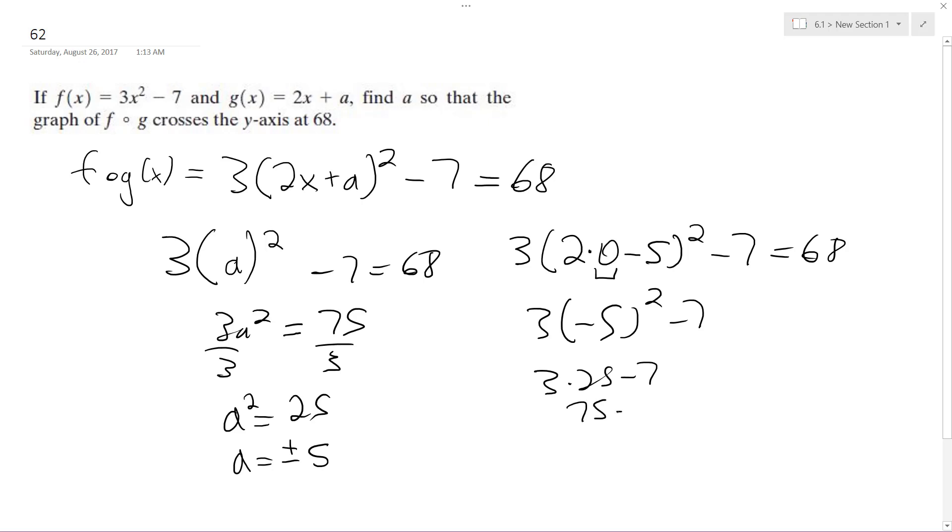So this is three times 25 minus seven. So 75 minus seven, which is equal to 68. So a equals plus or minus five checks out. That's it.